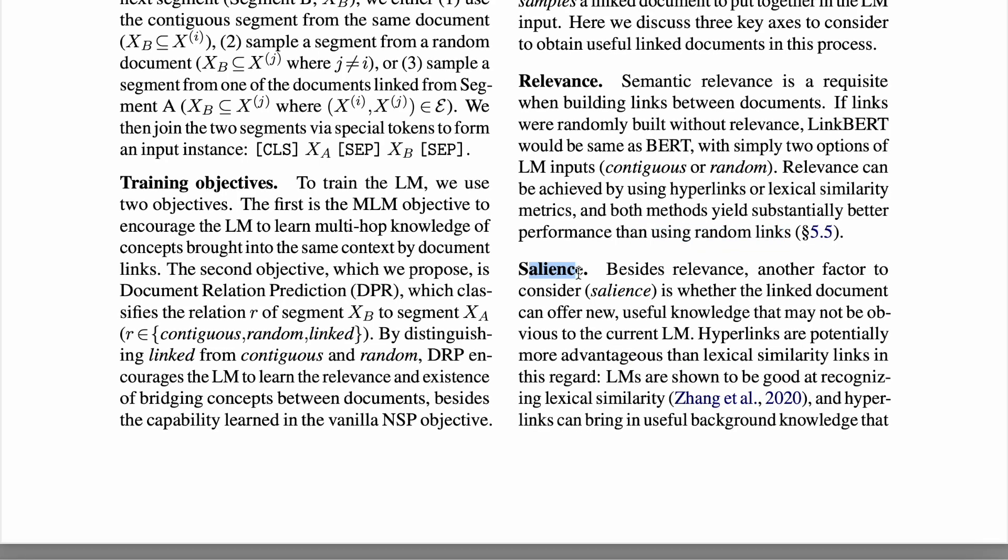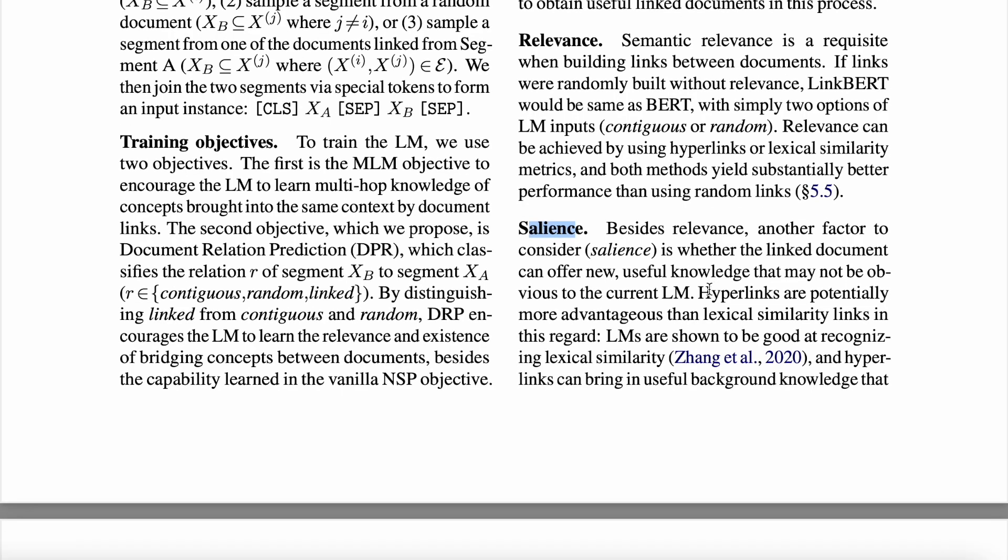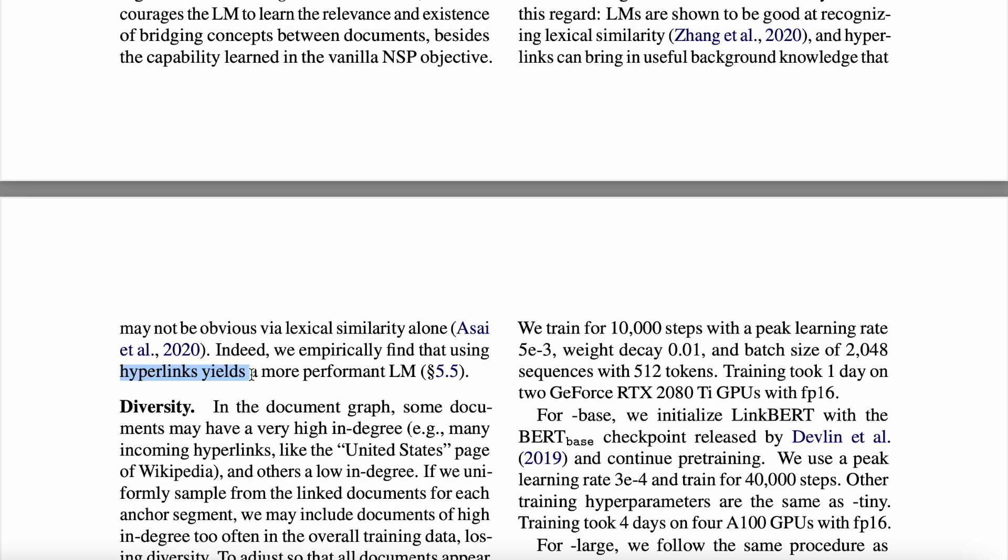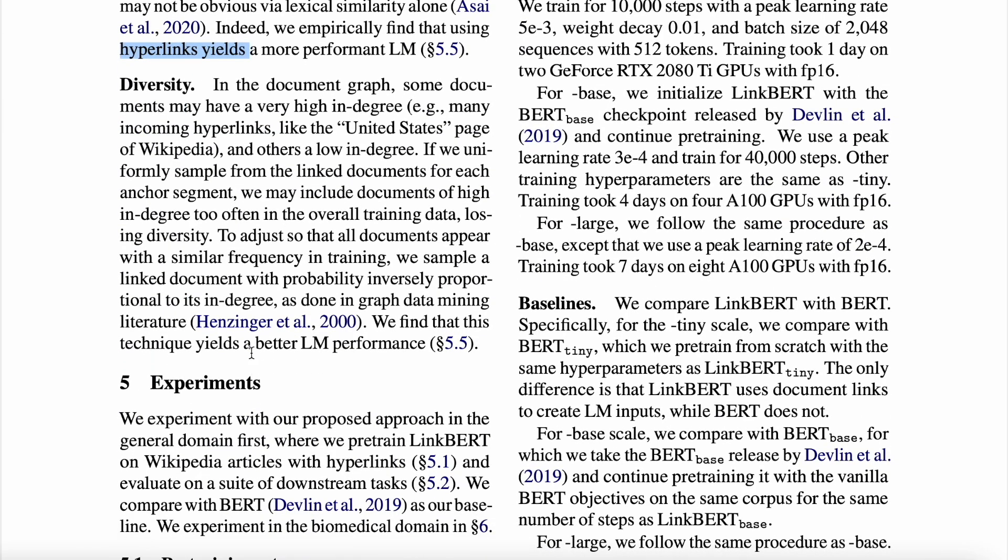The second is salience, which essentially calculates—like the new document that you're trying to link to the anchor document—what new knowledge it's bringing to the table. So in this case, they found that hyperlinks are potentially more advantageous because this is what people write documents and link these documents to external documents. With the lexical similarity, you can get these redundancies, and not always necessarily will you be adding documents that add new knowledge. So here hyperlinks perform really well.